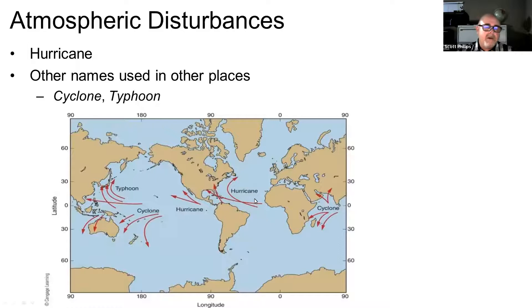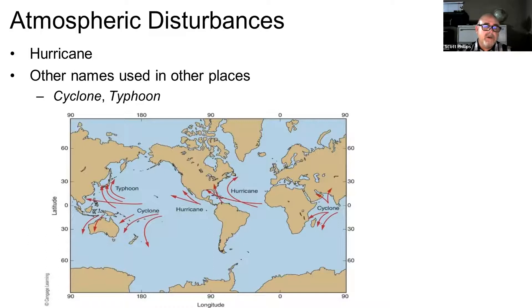We call them hurricanes, but other parts of the world have different names. If you've heard of a cyclone or a typhoon in East Asia, these are really the same thing as a hurricane. In other parts of the world they call them by different names, but cyclone, typhoon, and hurricane are really the same kind of storm.